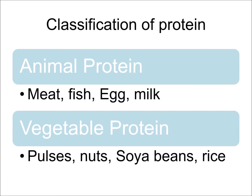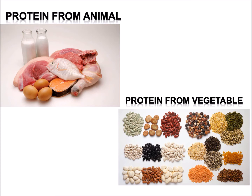The classification of protein is based on its sources. We get protein from animal sources and also from vegetable sources. Animal source proteins include meat, fish, egg, and milk — these are high quality proteins because they contain essential amino acids. Vegetable protein consists of pulses, nuts, soybeans, and rice. These are also important; people who cannot afford high quality protein can meet their needs through vegetable protein.